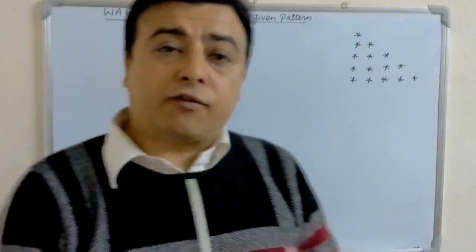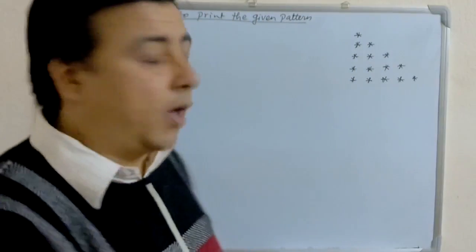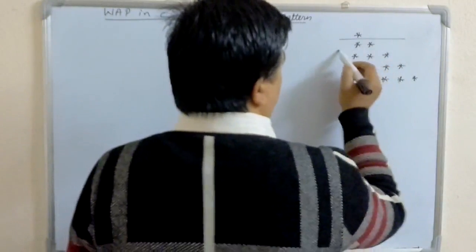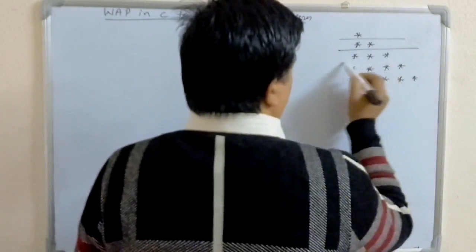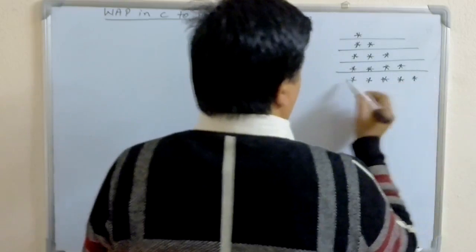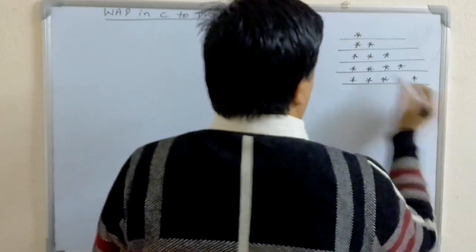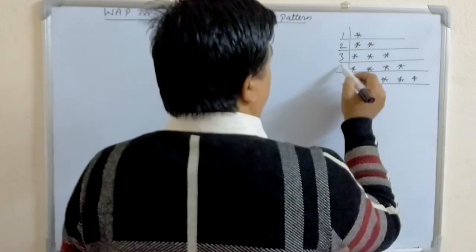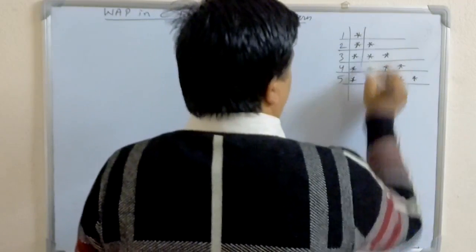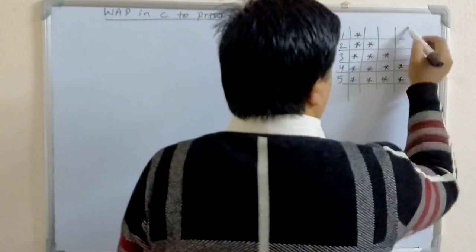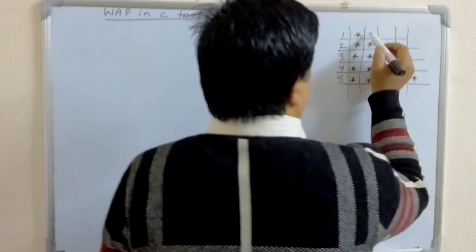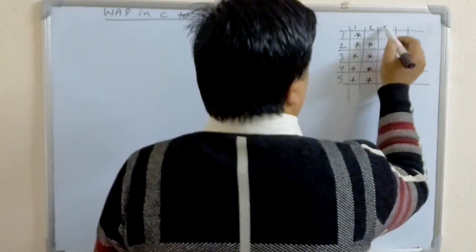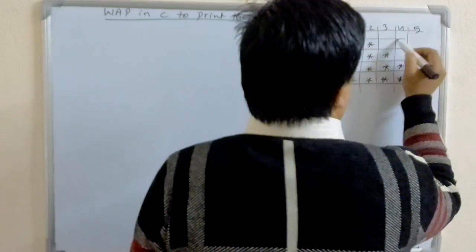First we have to know how many rows we have to print. Let's calculate the rows: 1, 2, 3, 4 and 5 rows. The columns are also 5: 1, 2, 3, 4 and 5.